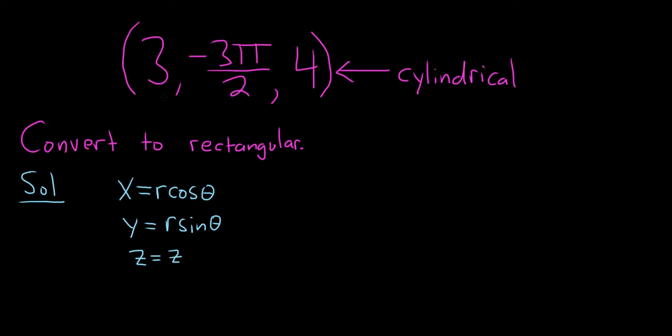Recall that when we have a point in cylindrical coordinates it's in the form r, theta, z. So all we have to do is plug everything in. So this is equal to r is 3, so this will be 3 cosine of negative 3 pi over 2.